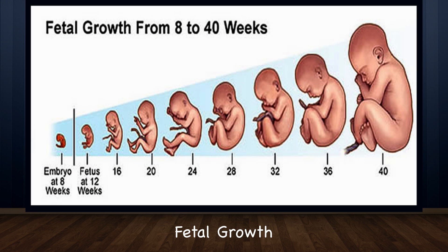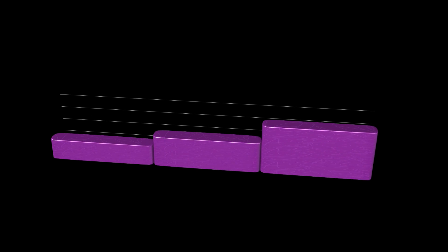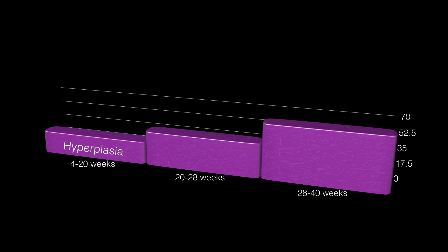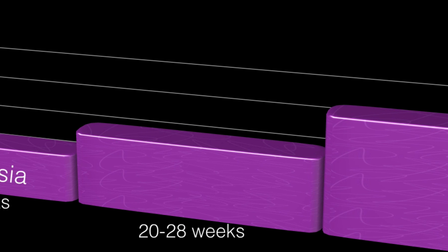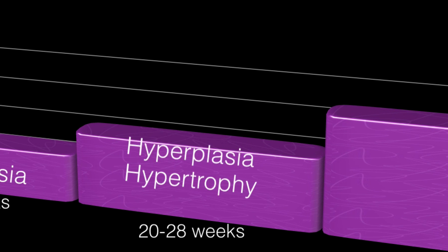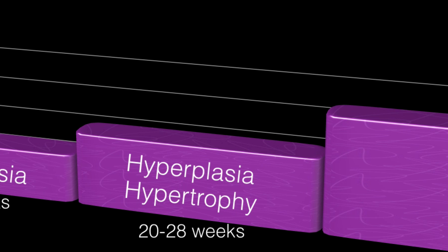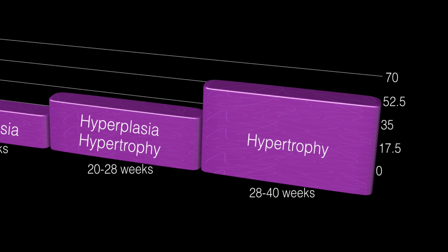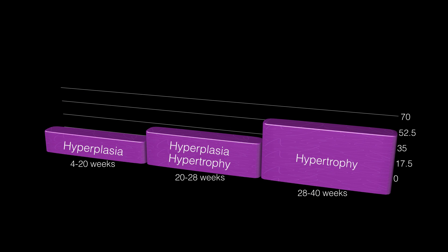In order to know the types of IUGR, one needs to understand how fetal growth occurs. Fetal growth occurs in three phases. In the first phase, between 4–20 weeks, there is only hyperplasia because of rapid mitosis, with an increase in DNA content. In the second phase, between 20–28 weeks, there is hyperplasia as well as hypertrophy of cells — mitosis starts decreasing whereas cell size starts increasing. In the last phase, from 28 weeks to term, there is only hypertrophy of cells.